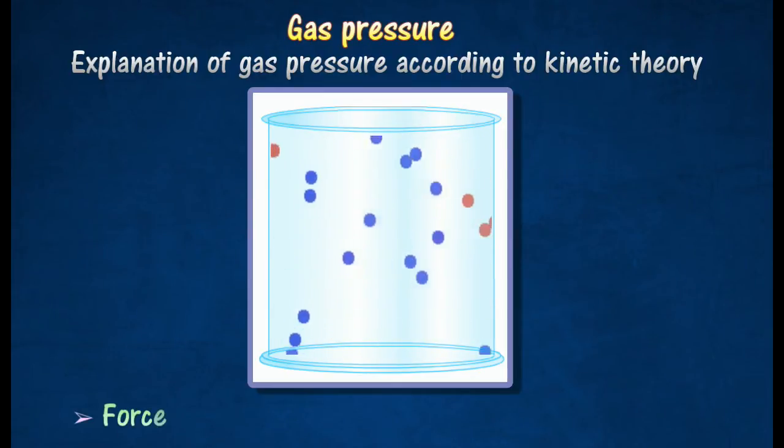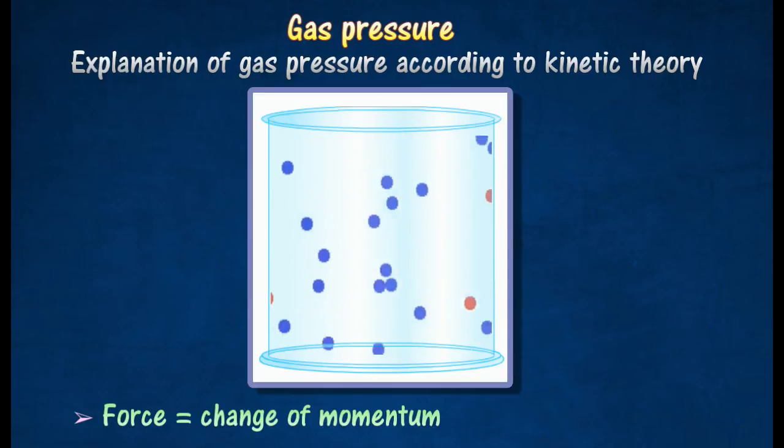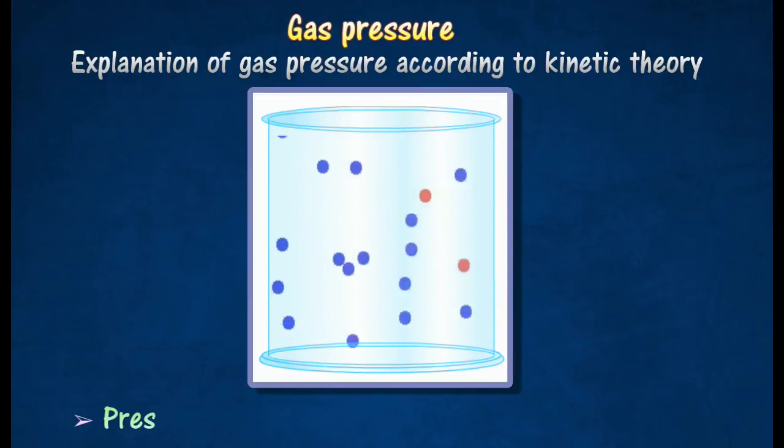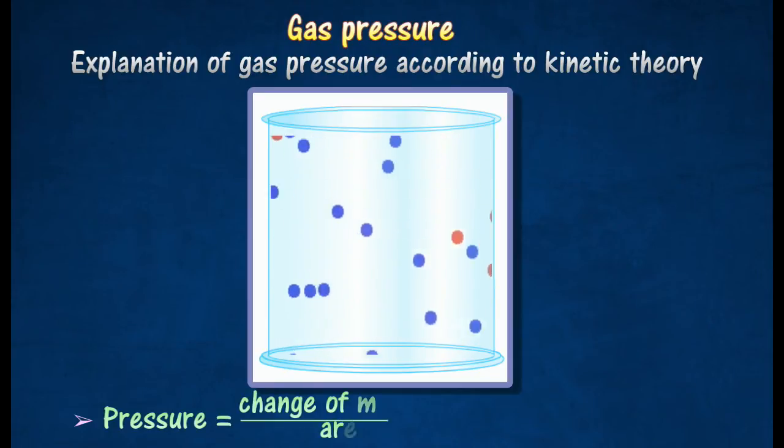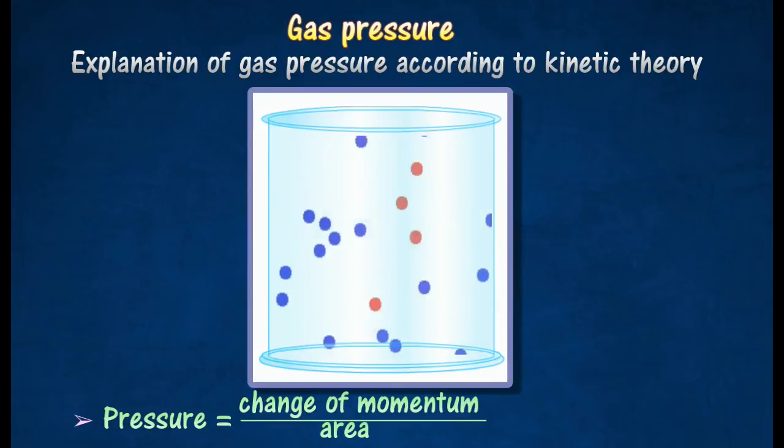Molecules in a gas are always moving randomly and constantly colliding with the walls of its container, resulting in a change of momentum, which exerts a force on the wall of the container. The force per unit area produced by collisions of gas molecules on the walls of the container is the gas pressure.